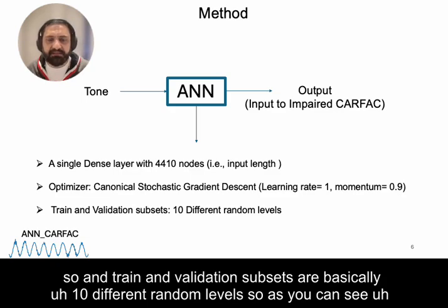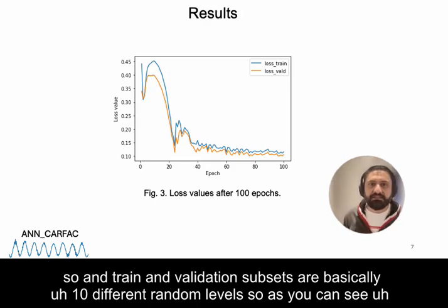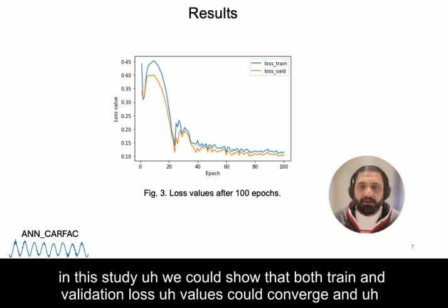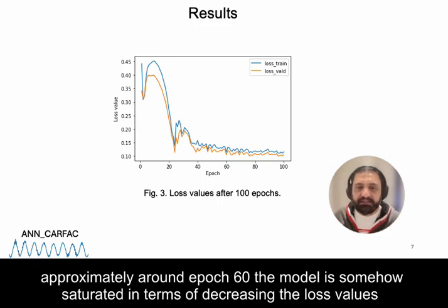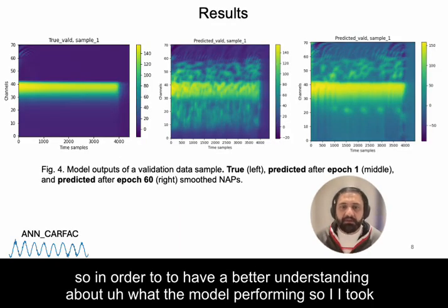The training and validation subsets consist of 10 different random levels each. As you can see, both the training and validation loss values converge, and at approximately epoch 60, the model becomes saturated in terms of decreasing loss values.